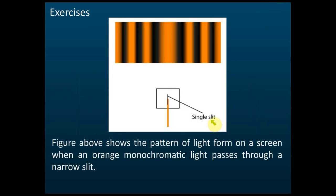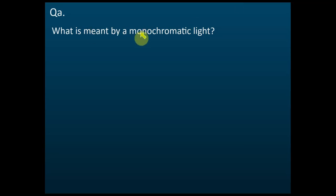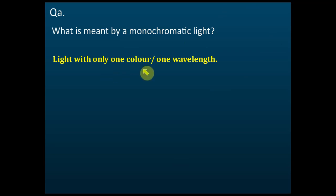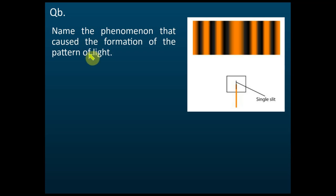Let's come back to this question. We have a monochromatic orange light passing through a single slit, and it spreads to a wider area — giving us the diffraction pattern. The question doesn't mention diffraction, so you need to identify it through the single slit and the patterns. First question: what is meant by monochromatic light? That is light with one color or one wavelength. Name the phenomenon: diffraction.